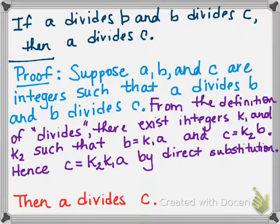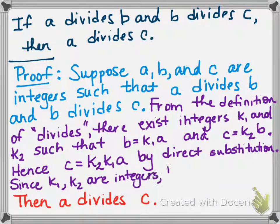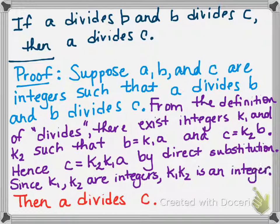So what do we want? We want that A divides C. We want that C equals an integer times A. So right now we have C equals this quantity, K2 times K1 times A. And the question is, is that an integer? Well, yes it is, but we have to say why. So since K1 and K2 are integers, that means that K1 times K2 is an integer. You could say that this is by closure of the integers, but I'm not going to require that of you. I do expect you to say that K1 times K2 is an integer though.